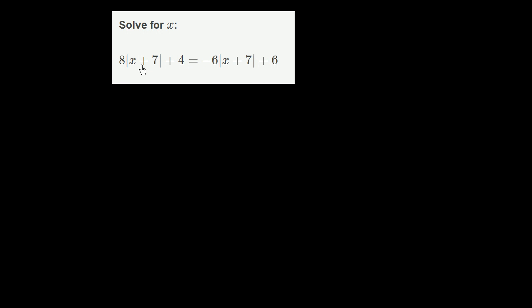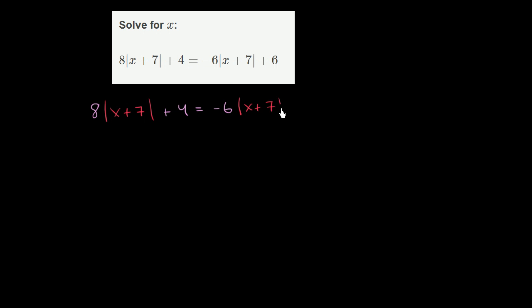We're asked to solve for x. Let me just rewrite this equation so that the absolute values really pop out. So this is 8 times the absolute value of x plus 7, plus 4 is equal to negative 6 times the absolute value of x plus 7 plus 6.